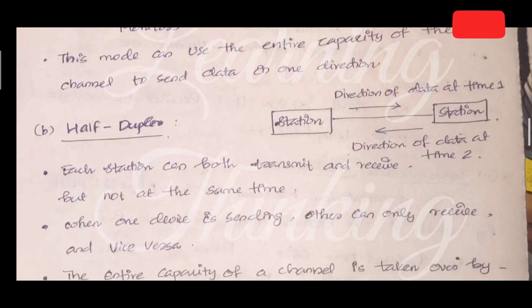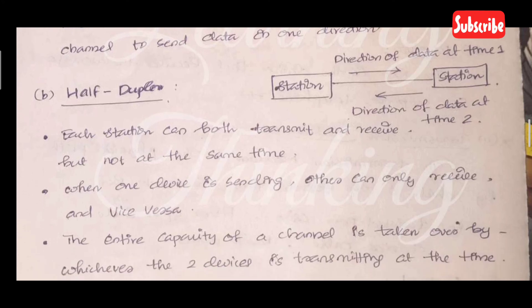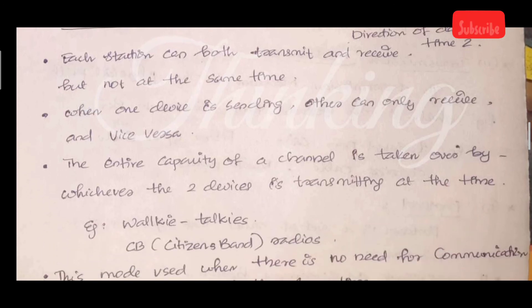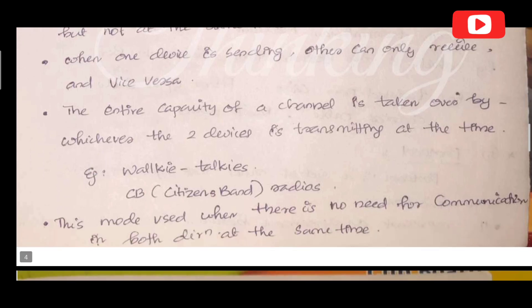In half duplex communication, each station can both transmit and receive, but not at the same time. When one device is sending, the other can only receive, and vice versa. The entire capacity of the channel is taken over by whichever device is transmitting at the time. Examples include walkie-talkies and citizen band radios. This mode is used when there is no need for simultaneous communication in both directions.